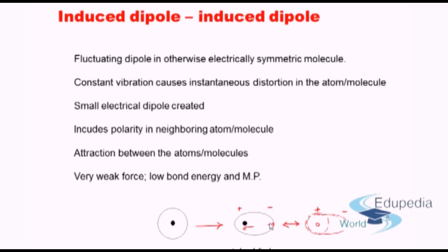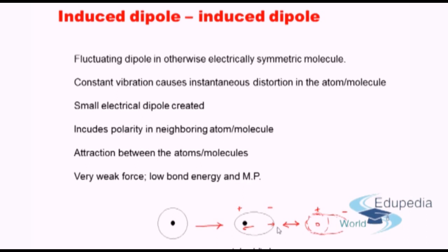Therefore, the attractive force is very weak in nature. This is in fact the weakest secondary force amongst the three types, because both dipoles are induced. This results in a very low bond energy, and such atoms or compounds have a very low melting point.